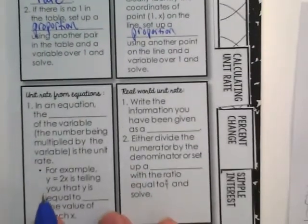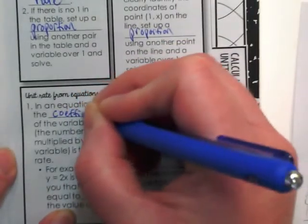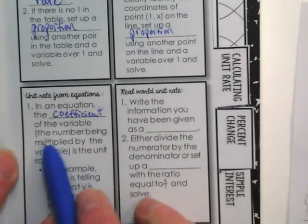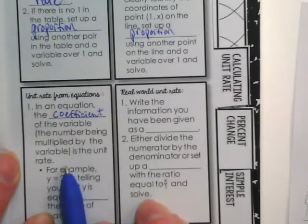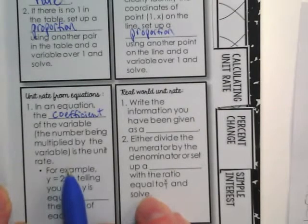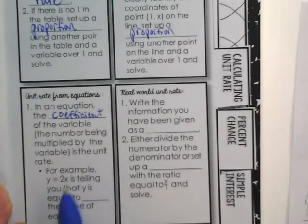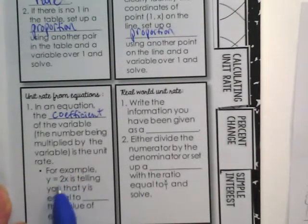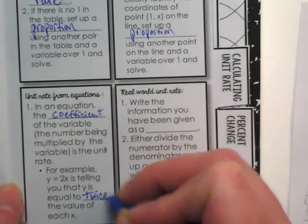Unit rate from equations: In an equation, the coefficient of the variable - the number being multiplied by the variable - is the unit rate. Remember our clown video for Flo Cab? He made ten dollars an hour and the equation was y equals 10x. For example, y equals 2x is telling you that y is equal to twice the value of x.